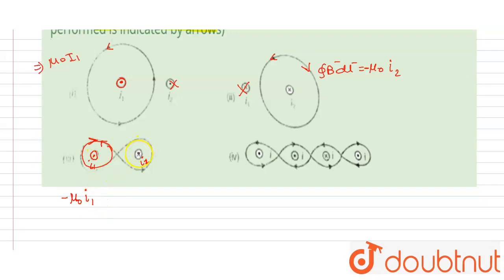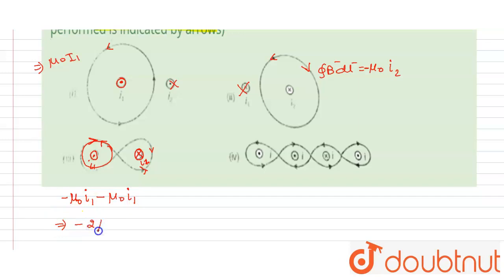For the second current in this loop, the current is into the page so the magnetic field should be in this direction, but in the question it is given in the opposite direction — so we take a minus sign again. That gives another -μ₀i1. Therefore, for the third loop, ∮B·dl = -2μ₀i1.